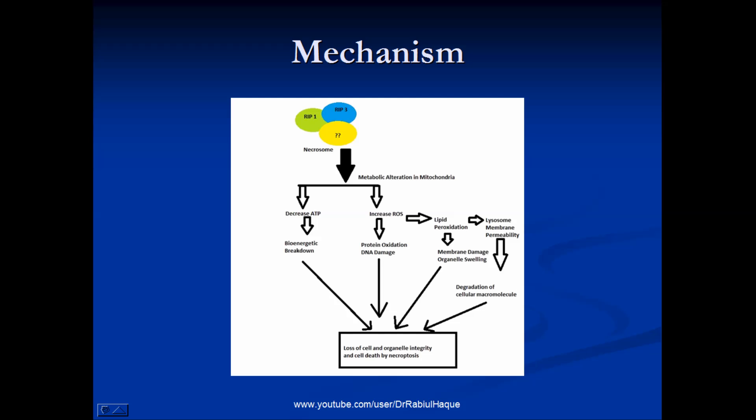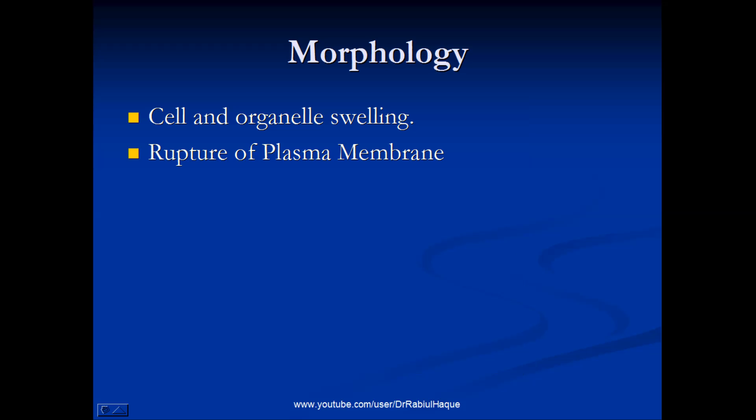Now that we have briefly discussed the mechanism of necroptosis, we will move on and briefly discuss the morphology. I think it's obvious from the discussion that during necroptosis, there will be rupture or disruption of the cell membrane, swelling of different organelles, and inflammatory response. And we have discussed the reason behind all these morphological changes.